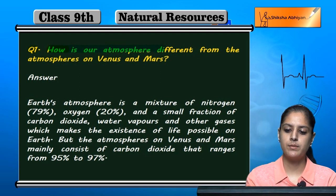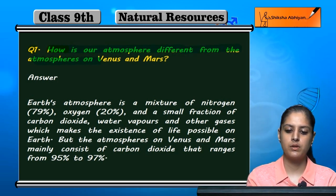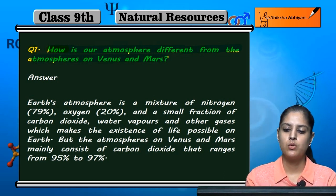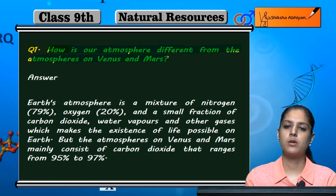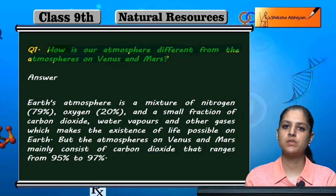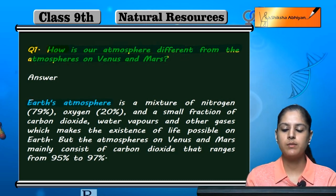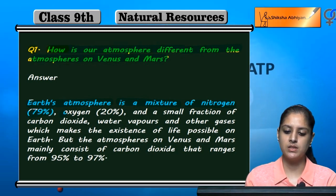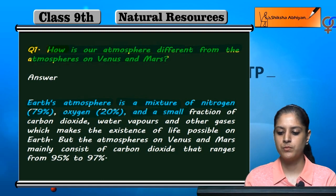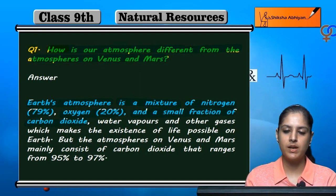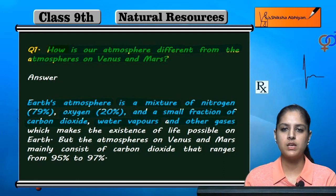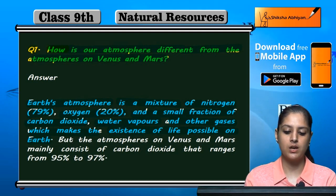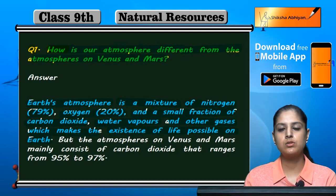How is Earth's atmosphere different from the atmospheres on Venus and Mars? Earth's atmosphere is a mixture of nitrogen, which is 79% present, oxygen, which is 20% present, and some small quantities of carbon dioxide, water vapors, and other inert gases.